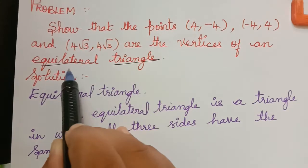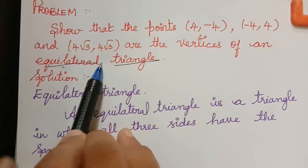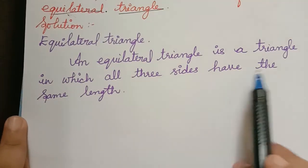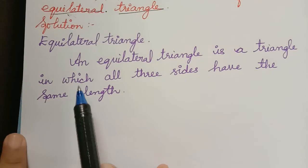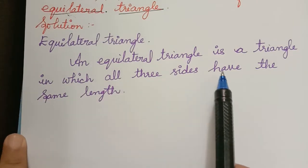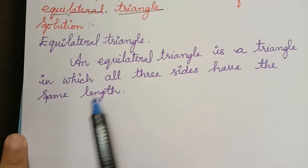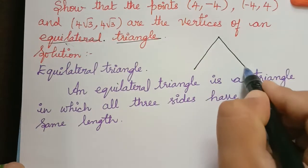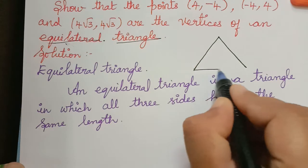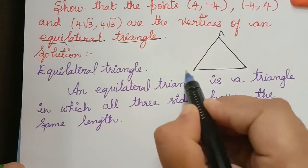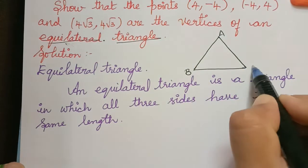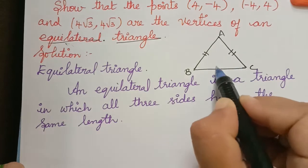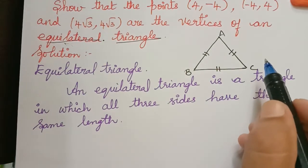So now what is an equilateral triangle — we have to understand that. An equilateral triangle is a triangle in which all three sides have the same length. So if we have a triangle ABC, then all three sides of this triangle will be of equal length.